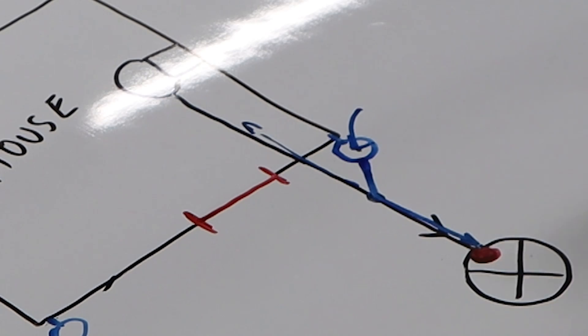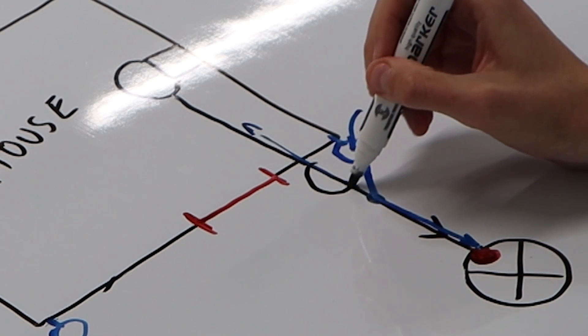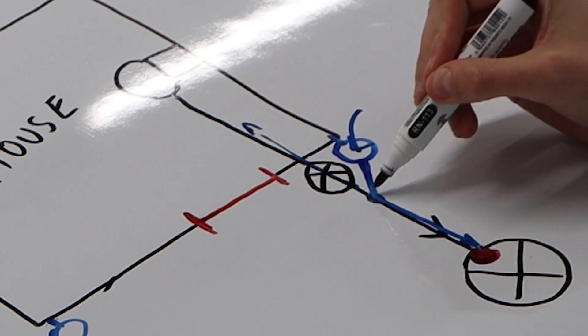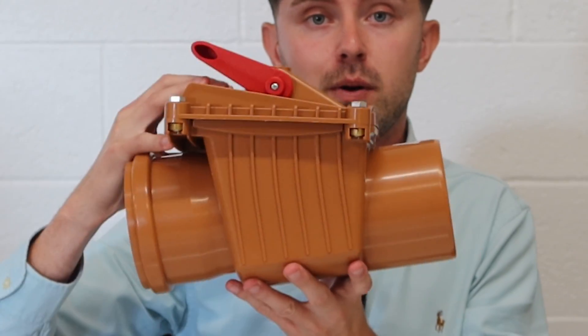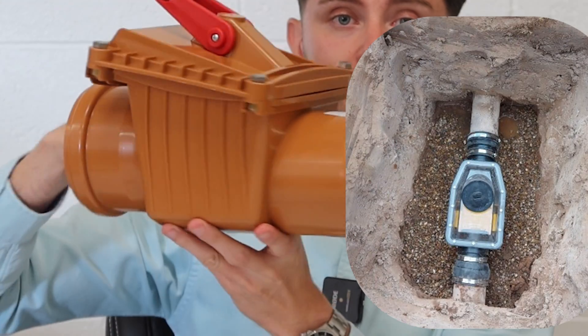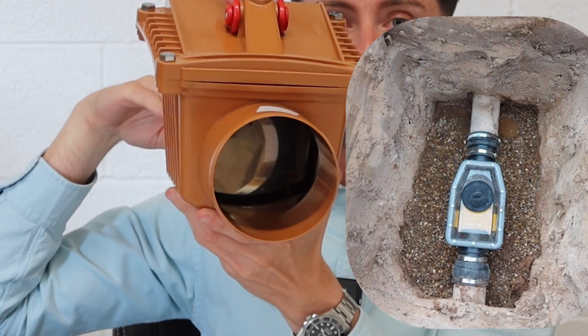This leaves you with a few options. The most expensive of which would be to fit another manhole or inspection chamber the far side of that confluence, in which you would fit what we call a full port non-return valve which lets water flow out but not back the other way.